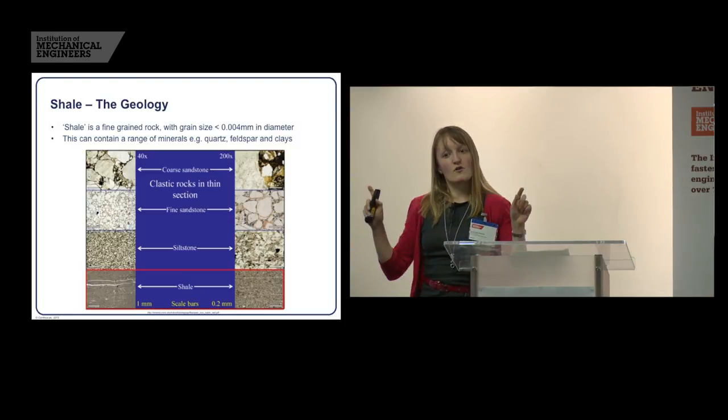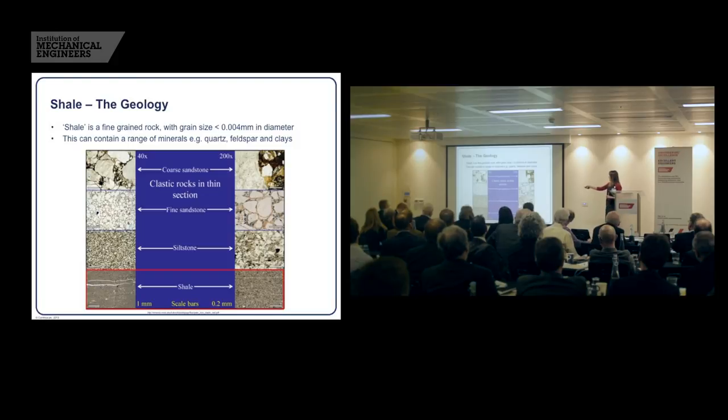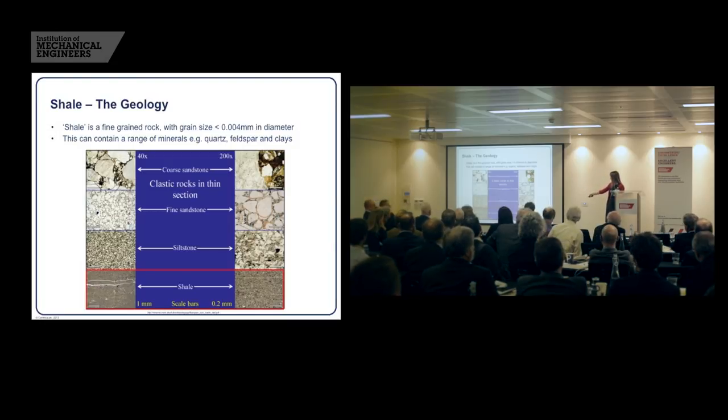If we compare it to what we call conventional reservoirs, sandstones and limestones, at the top of this chart we have a coarse sandstone, so this might be a very nice reservoir. The scale bars are one millimeter, and in this column we've zoomed in a bit, and the scale bars are 0.2 millimeters. You can see the nice coarse sandstones, big quartz grains, some smaller grains filling in the holes in between. If we zoom in, some of these pore spaces are filled with clays, but there's other pore spaces that are filled with oil.